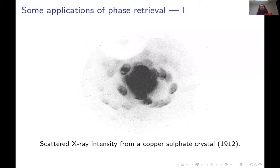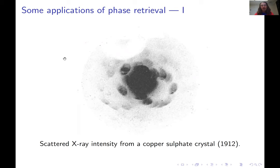The picture you're looking at here is scattered x-ray intensity from a copper sulfate crystal. In more mathematical terms, that is the magnitude of the Fourier transform of a 2D projection of an electron density.